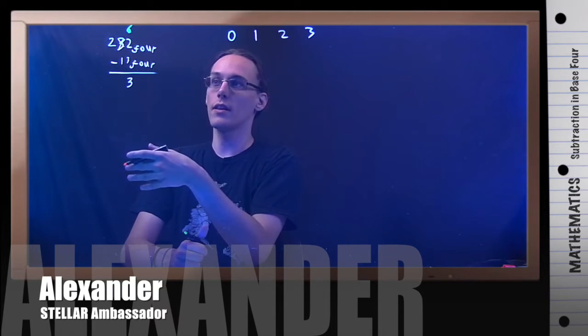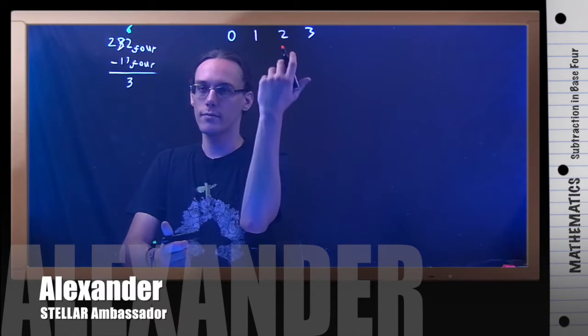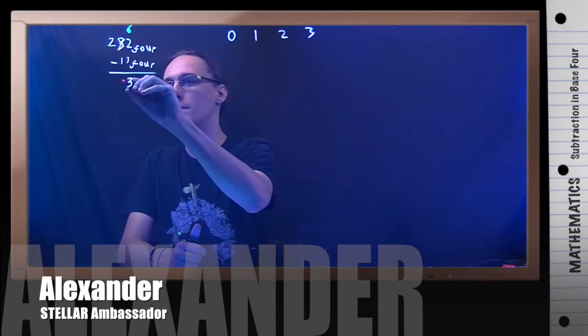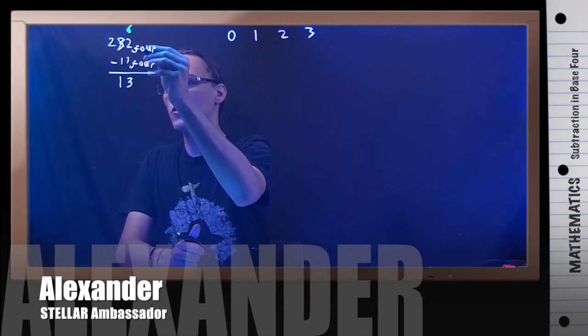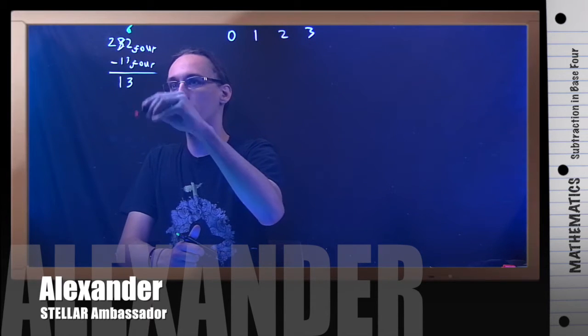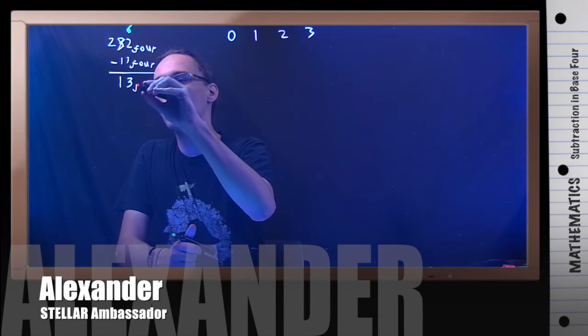Then I just move over to the left. I have 2 minus 1. That's 1. So 3, 2 minus 1, 3 in base 4 comes out to be 1, 3.